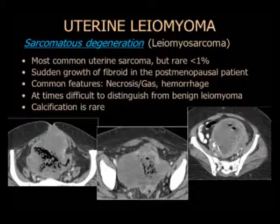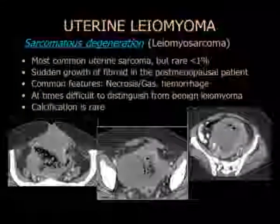La degeneración sarcomatosa es una característica clínica: hay un crecimiento repentino del fibroma, la paciente postmenopáusica empieza a sangrar de la nada, y frecuentemente hay necrosis porque la lesión supera el aporte de sangre. Sospecho mucho cuando veo gas en un útero fibromatoso no embolizado — el gas me preocupa en cuanto a degeneración sarcomatosa. Acá una paciente con gran útero fibromatoso con importante licuefacción y necrosis; les digo a mis residentes que tengan cuidado cuando hay gas en un útero con fibromas.